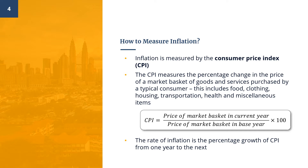Here is the basic formula to calculate the CPI. We take the ratio of the price or total expenditures of the market basket of goods and services in the current year over the price or total expenditures of the market basket in the base year, and multiply by 100. The rate of inflation is basically the percentage change of CPI from one year to the next.